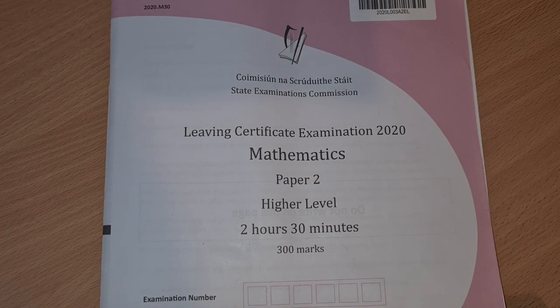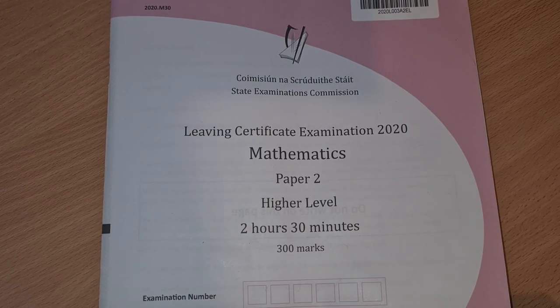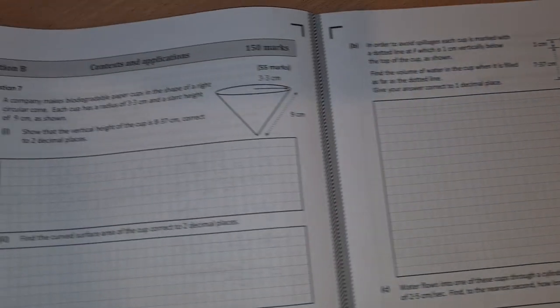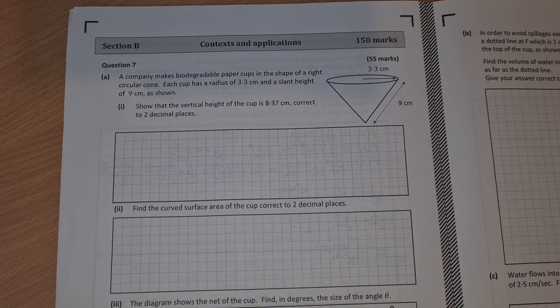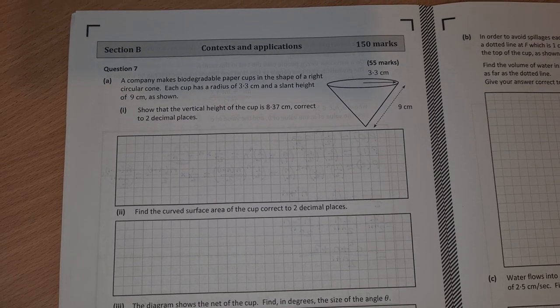Leave Insert Higher Level Maths 2020 Paper 2. This is the solution video to question 7. Question 7 is our first question from section B. It's worth 55 marks and it's an area and volume question.